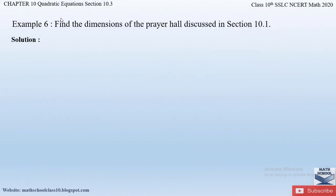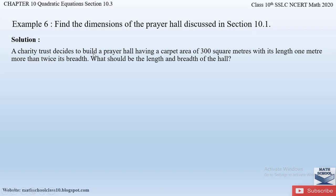Now let us solve example number 6 from chapter 10, quadratic equations: find the dimensions of the prayer hall discussed in section 10.1. A charity trust decides to build a prayer hall with a carpet area of 300 square meters, with its length 1 meter more than twice its breadth. We have to find the length and breadth of the hall.